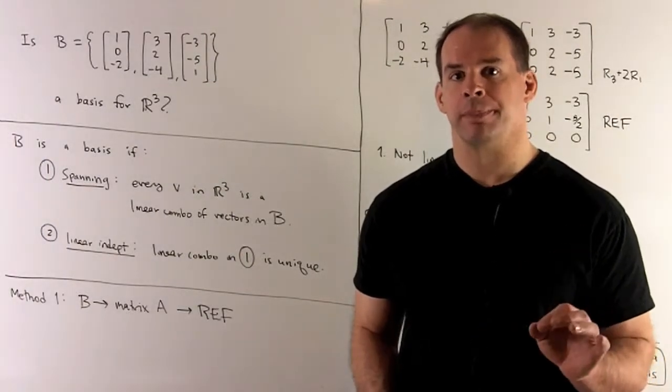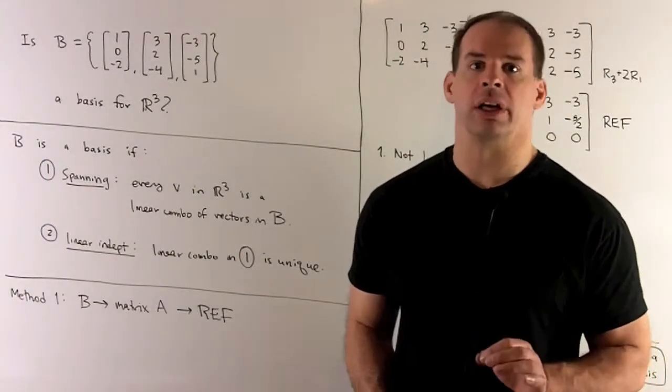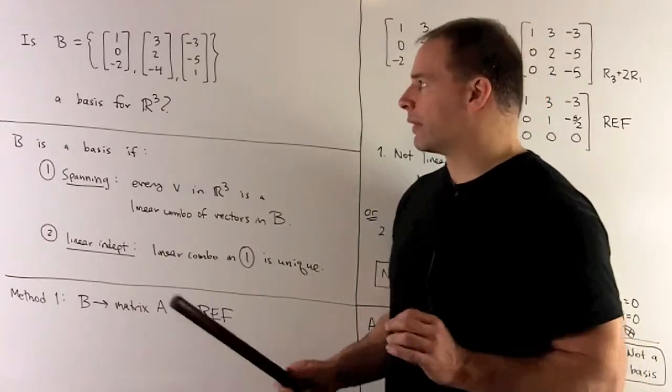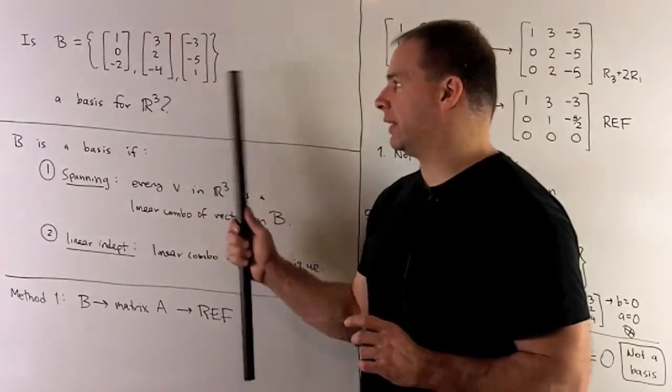Is the following set of vectors a basis for R³? We have three vectors, which we'll call V₁, V₂, and V₃.